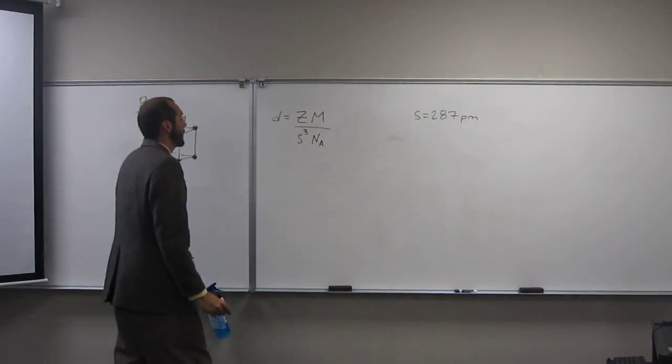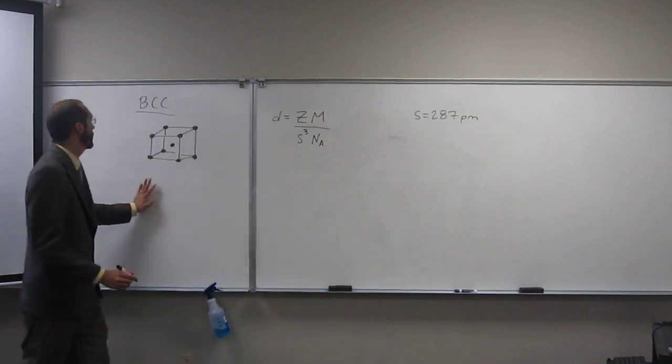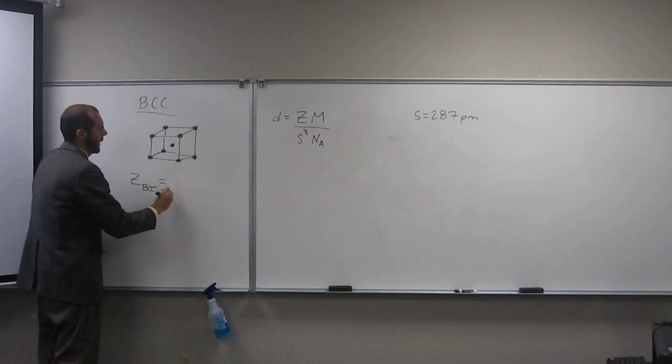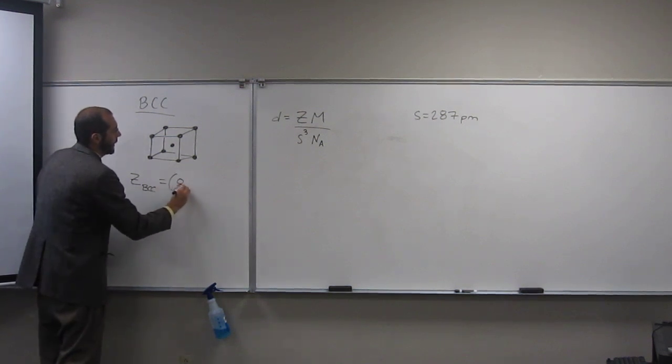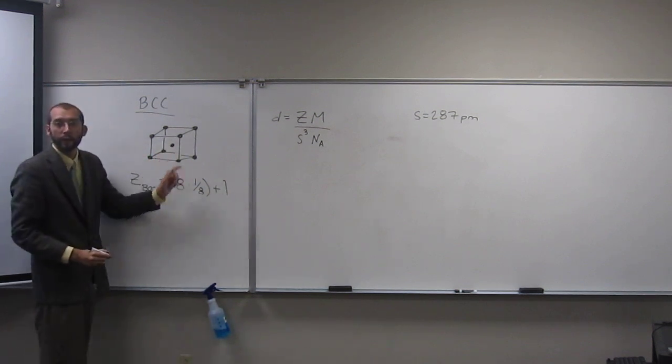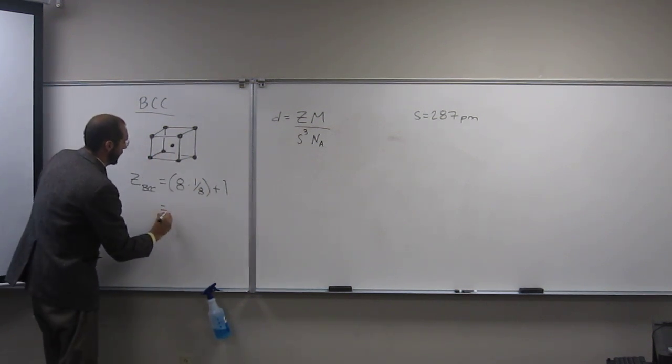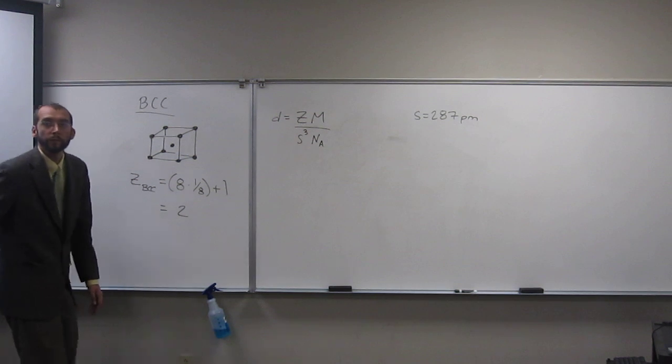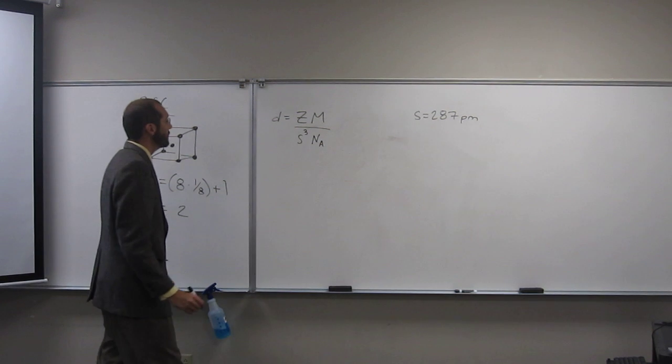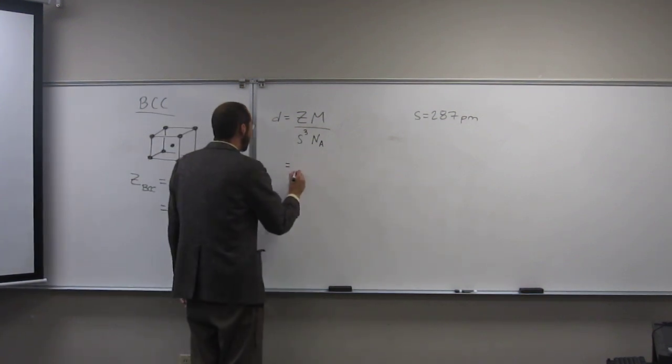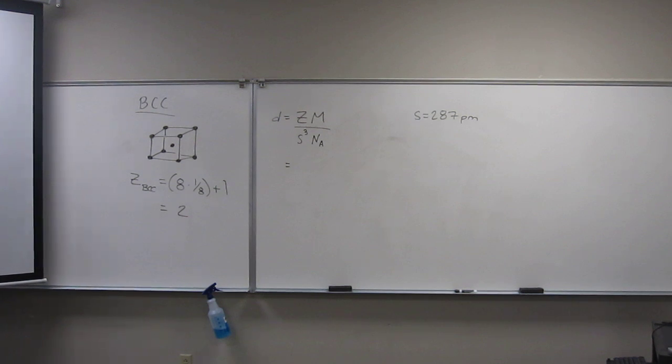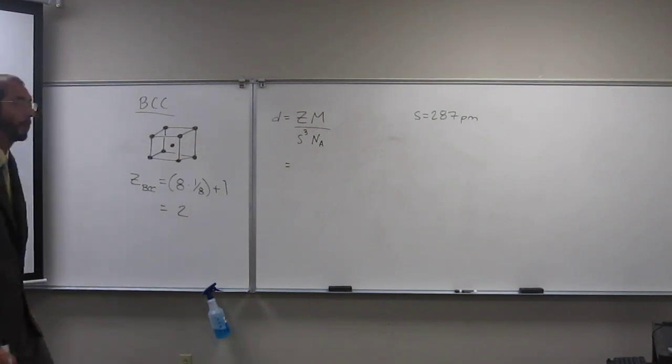It's asking us for density, so that's nice. Remember, Z for a body-centered is going to be 8 times one-eighth plus that one in the center, so it's going to be 2. You can just memorize 2 or do that every time. It's always going to be the same for body-centered, right?